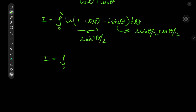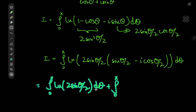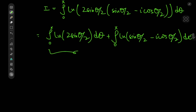So I equals the integral from 0 to x of log[2·sin(θ/2) · (sin(θ/2) − i·cos(θ/2))] dθ, where the factor 2·sin(θ/2) can be factored out. Using properties of the logarithm and linearity of integration, this becomes the integral from 0 to x of log(2·sin(θ/2)) dθ plus the integral from 0 to x of log(sin(θ/2) − i·cos(θ/2)) dθ. That first integral is actually the negative of the Clausen function of x, i.e., −Cl₂(x).